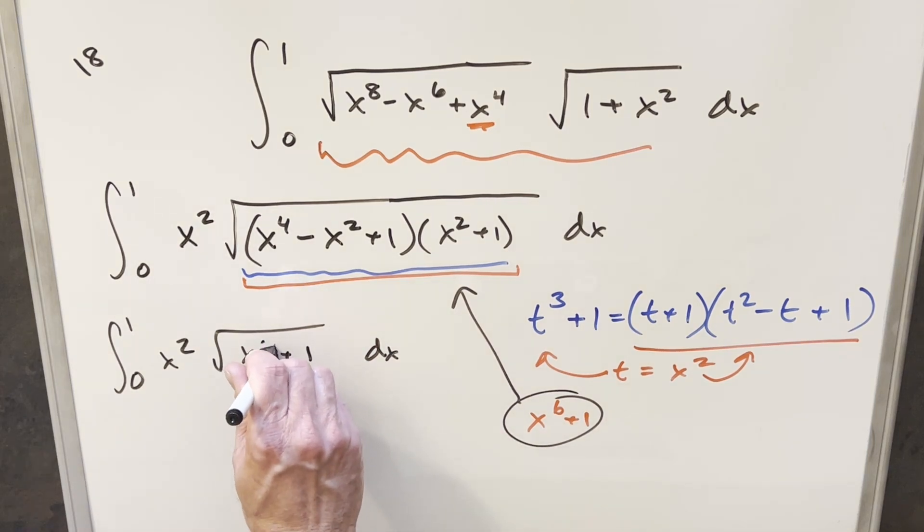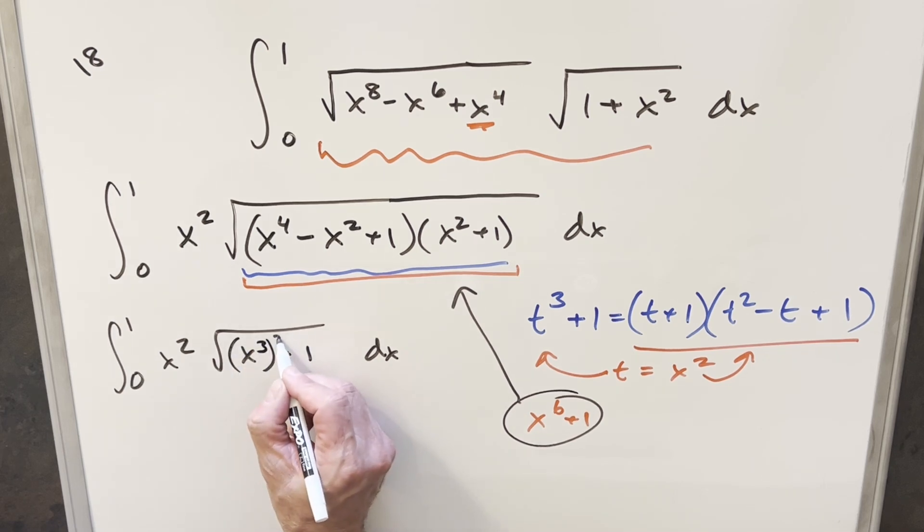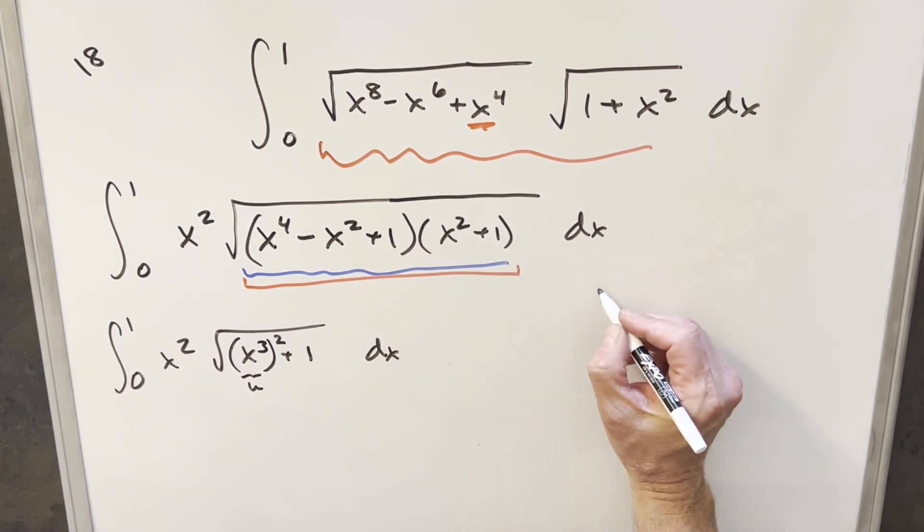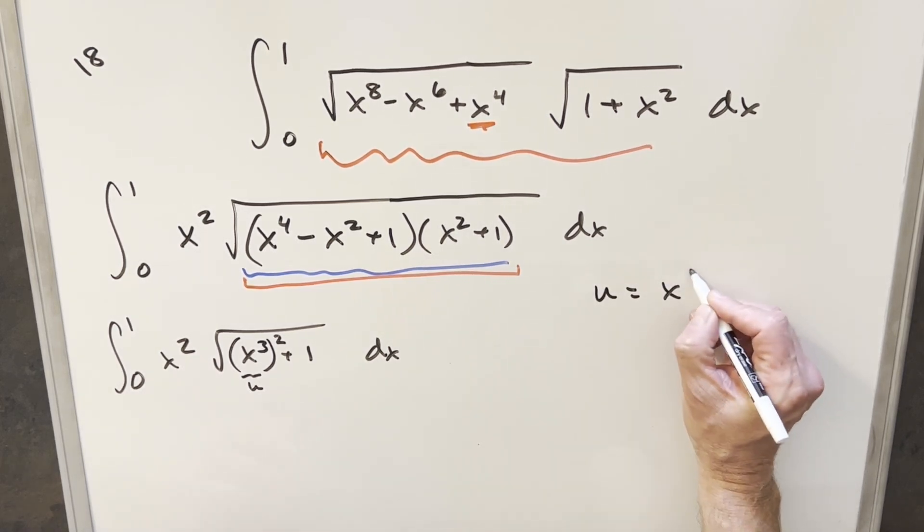But then what I can do to set up a u substitution, instead of looking at x to the 6th, let's look at this as x cubed squared. Because then if I take a u substitution here, it's going to work well with x squared. So let's just see how this is going to work. I want my u to be equal to x cubed here.